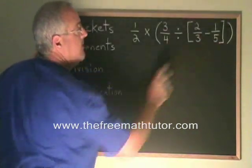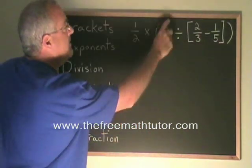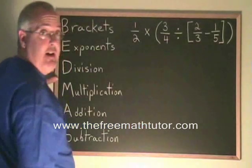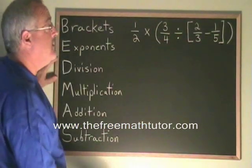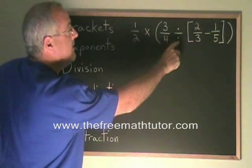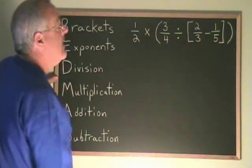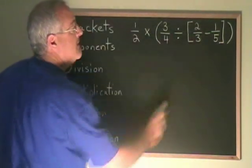Inside the big bracket, we have a small bracket. And when you have nested brackets, you do the innermost one first. So that means we're ignoring the division for now as well. And the first operation we're going to do is this subtraction.